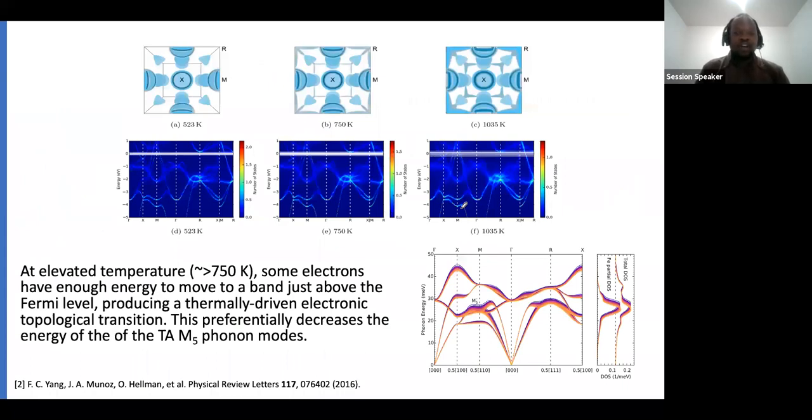The Fermi surfaces shown in our diagrams are at temperatures elevated greater than 750 Kelvin. These results show that some experiments have energy enough to move a band just above the Fermi energy, producing thermally driven electronic topology transitions. This preferentially decreases the energy of the transverse acoustic M5 modes, as we can see happening in our band structures slightly above the Fermi levels.